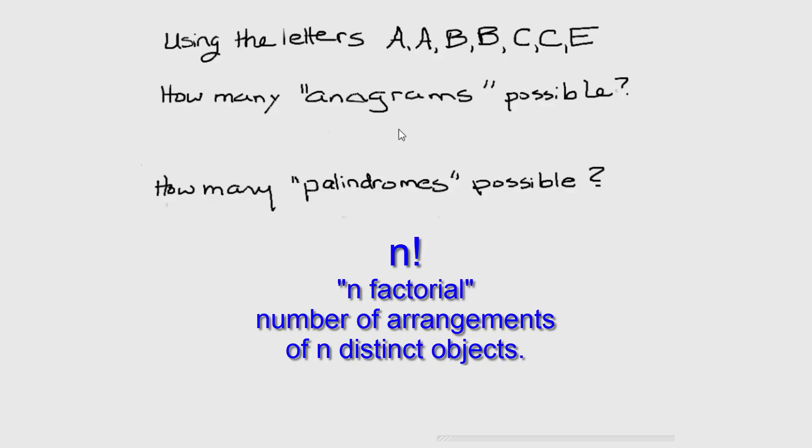Now, if you're familiar with counting methods, seven factorial is the number of ways to arrange seven objects. But if we just use seven factorial, we're actually going to get a number that's too large. Why?